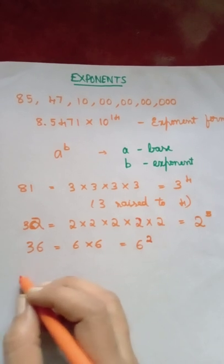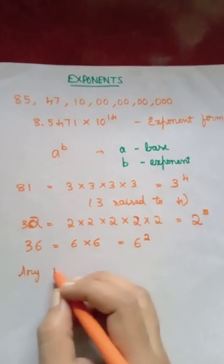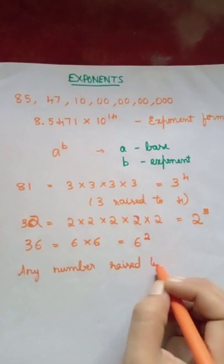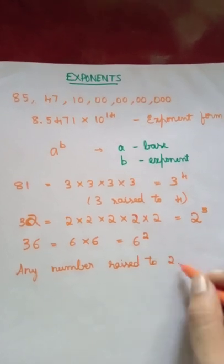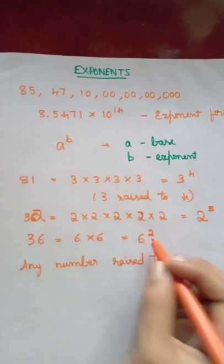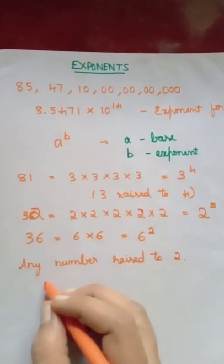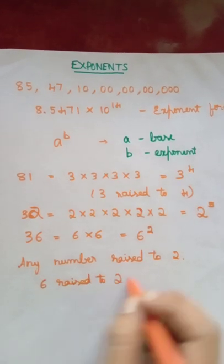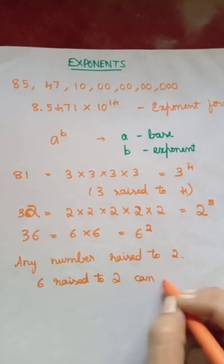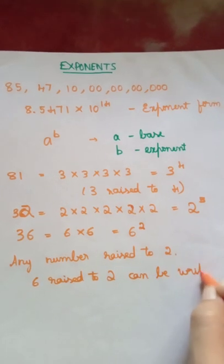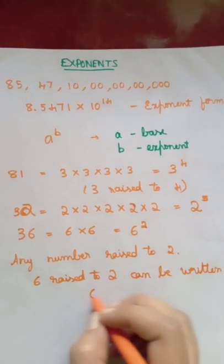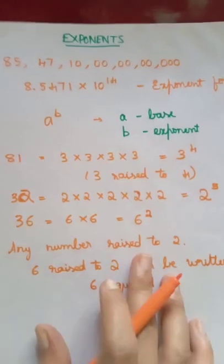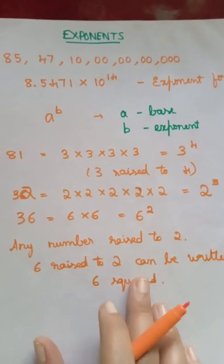Now some common terms. Like if you have any number raised to 2, then see here 6 square. You have 6 raised to 2, so here 6 raised to 2 can be written as 6 squared. So any number raised to 2 it can be written as that.